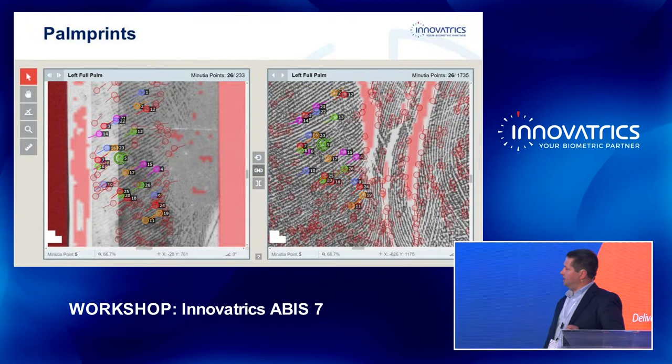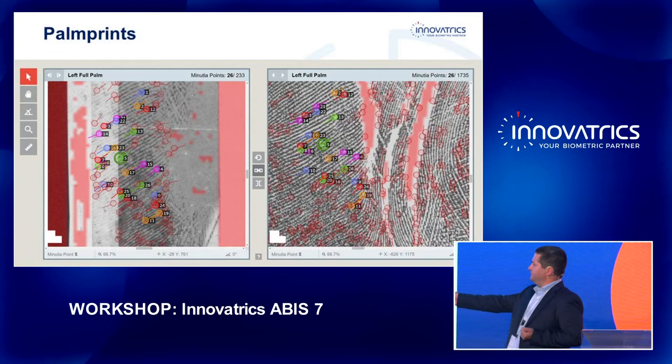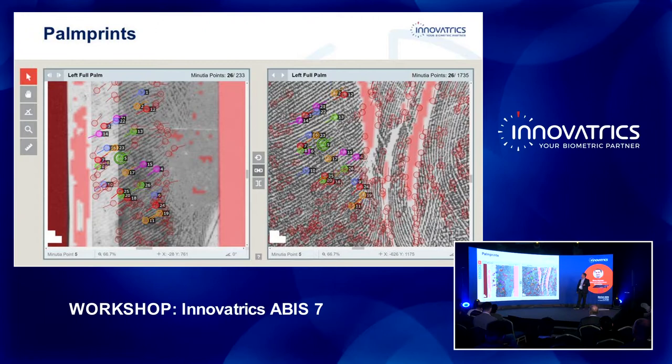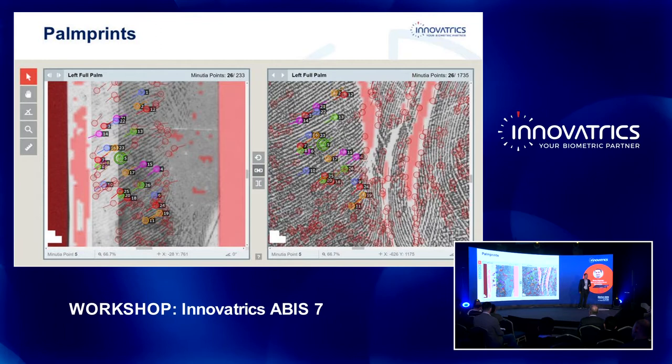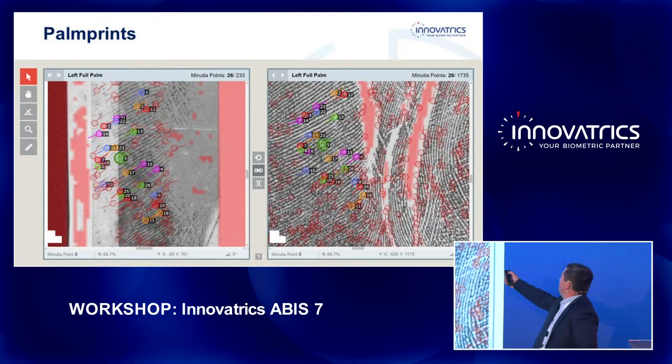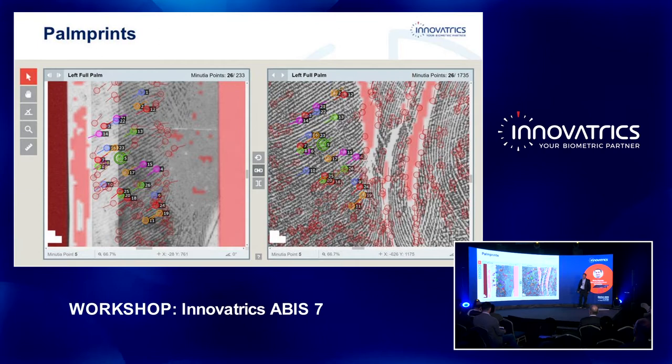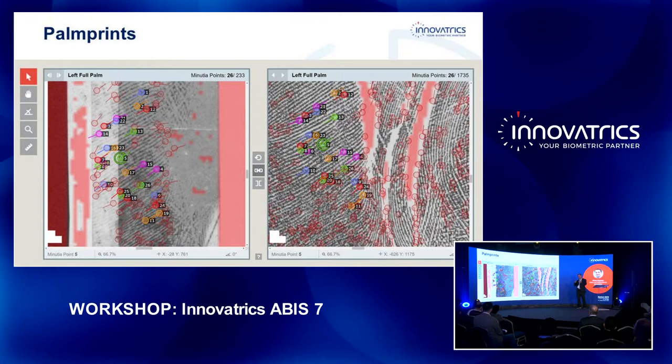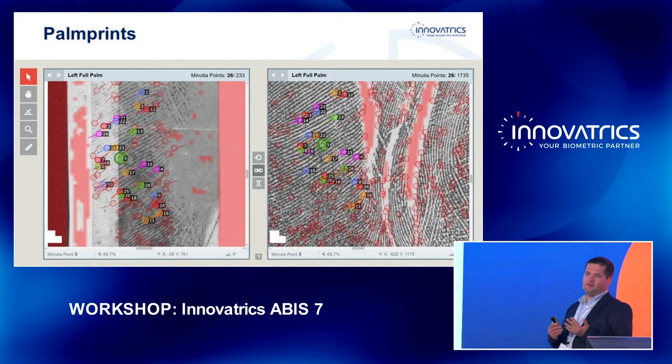You can even use the adjudicator for matching. In this scenario, we have the latent palm prints on the left and the reference palm print on the right. It may look the same as fingerprints, but if you look at the number of minutia points — 26 out of 1,735 — you can see this is something completely different.